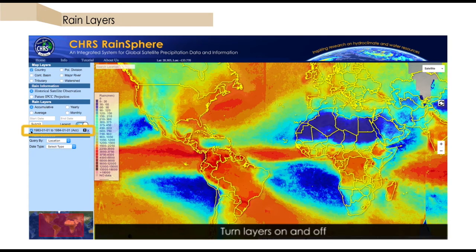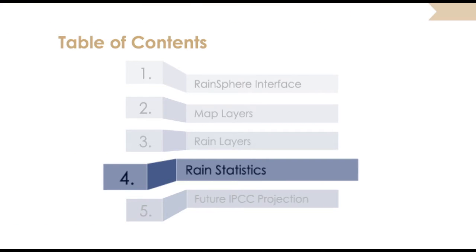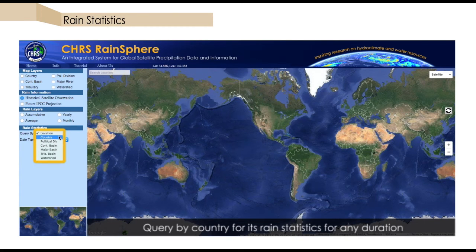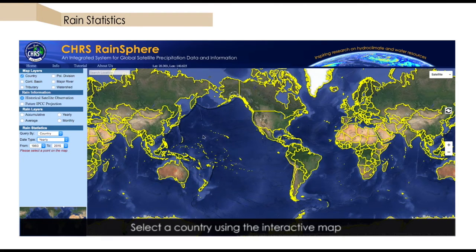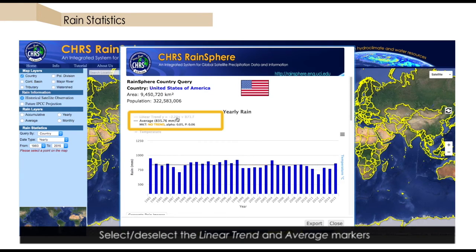We can also toggle on or off any rain layer for which we have previously searched. The automated statistics capabilities of RainSphere is one of the most powerful features of the system. Let's start with an example of querying annual statistics for a country. Under our query by menu, we select country and a yearly date type. Let's go ahead and select the entire historical period for evaluation. Now we click on a country using the interactive map and see the automatically generated report with basic statistics. We can toggle on or off the linear trend and average markers, depending on what we want to visualize.